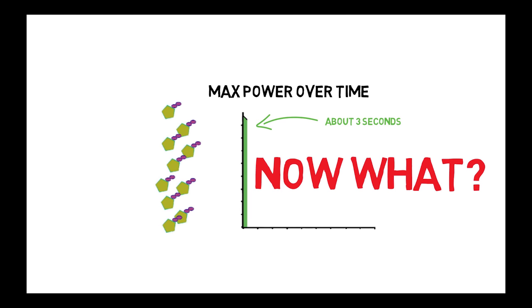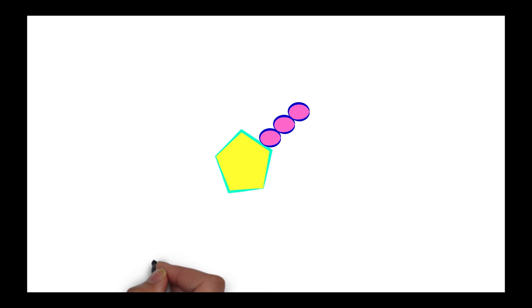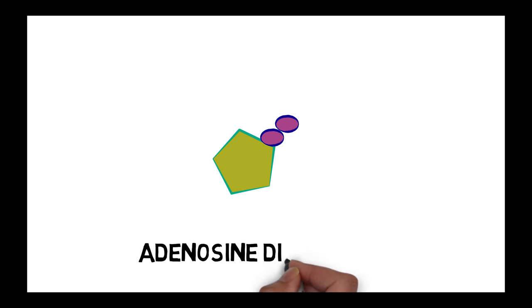We've done 3 seconds and we're out of power already? Well, not so fast, because your body has a trick up its sleeve. When your body uses an ATP, it only uses the third phosphate in the chain, so there should still be something left over, right?